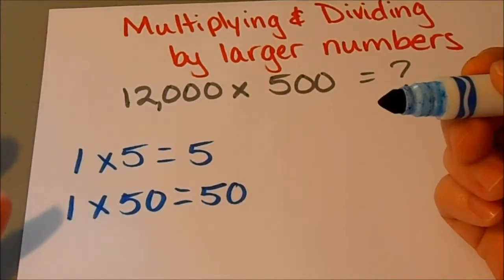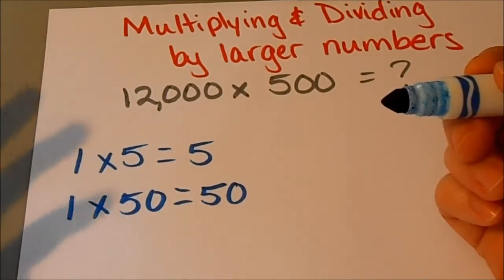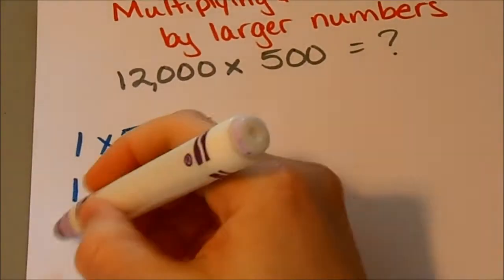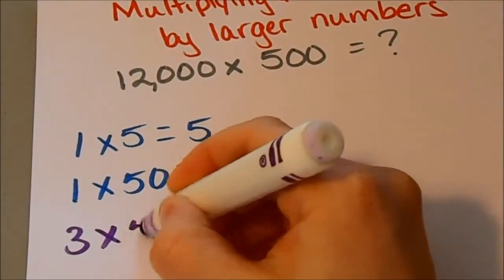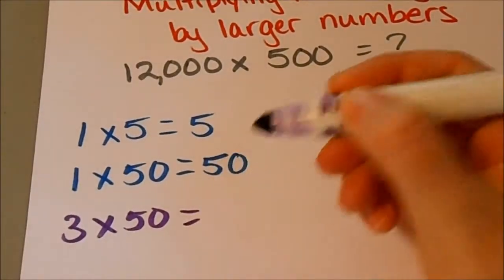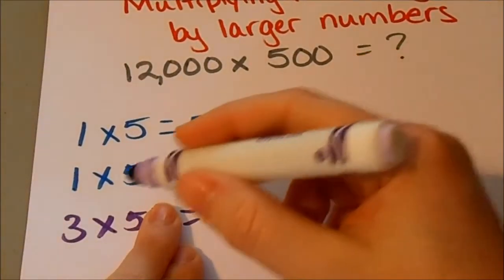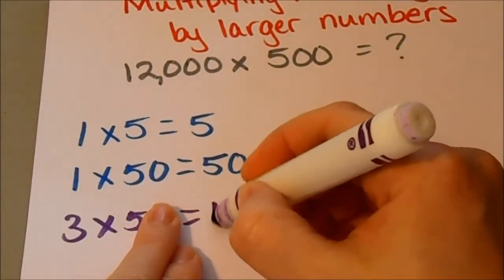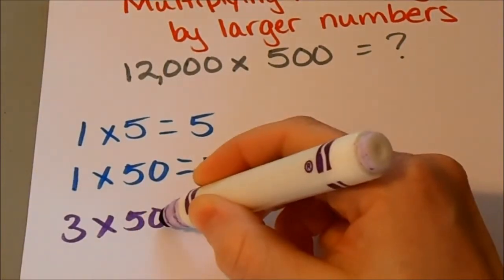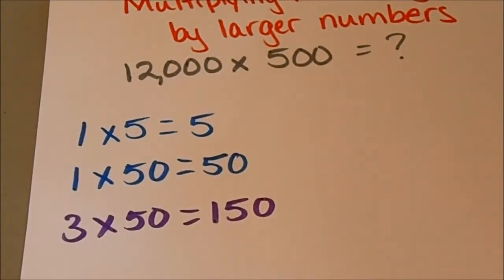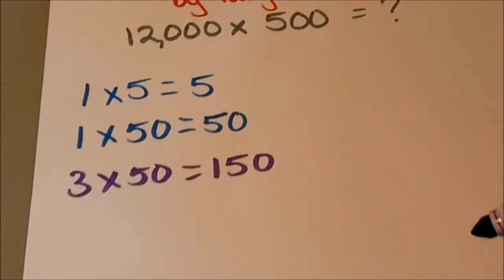Of course we know 1 times any number is just that same number, so let me give you a slightly different example. How about 3 times 50? It works the same way. I can just cover up that zero, do 3 times 5 which is 15, and then I've got a zero there, so I just tack on another zero. My answer is 150.